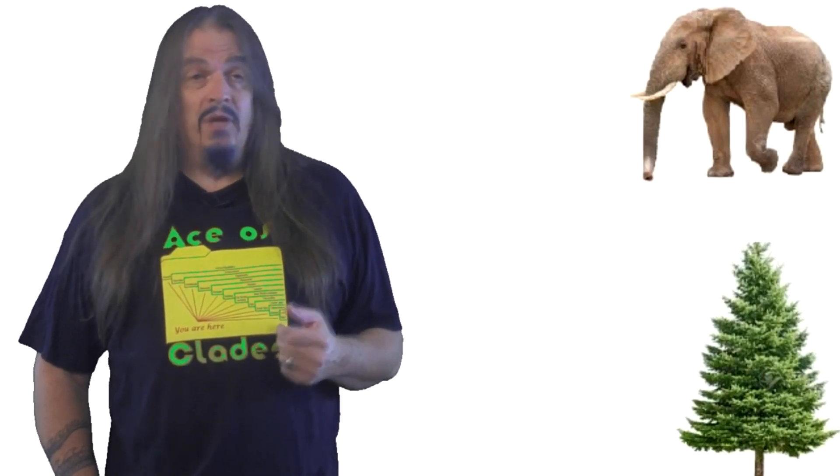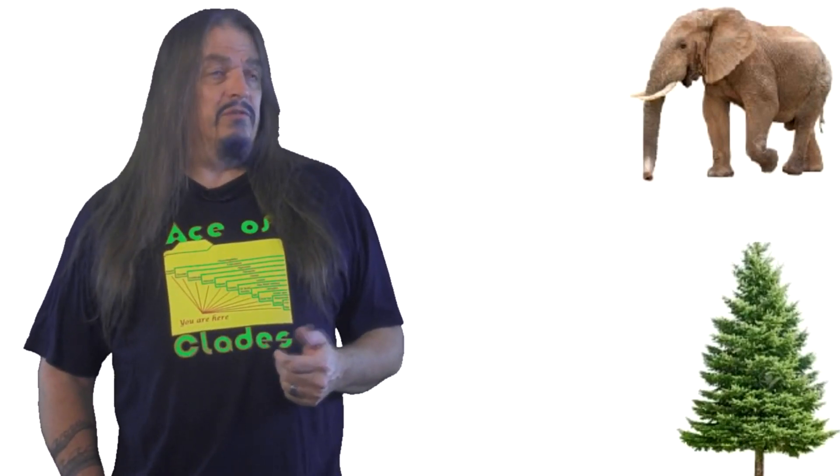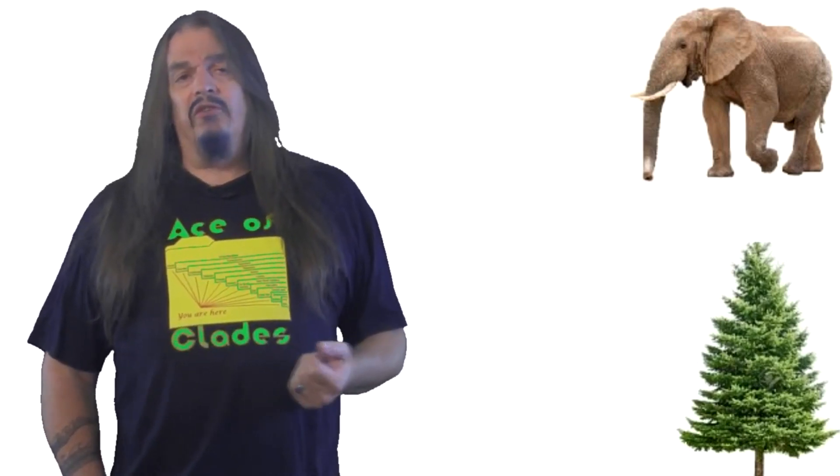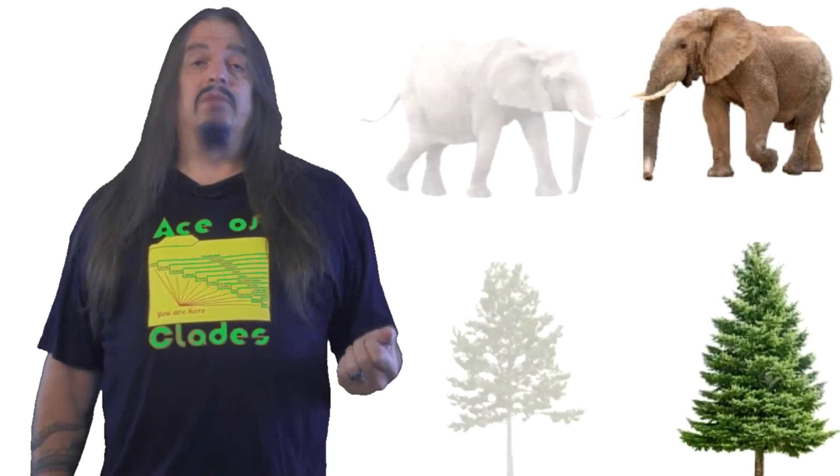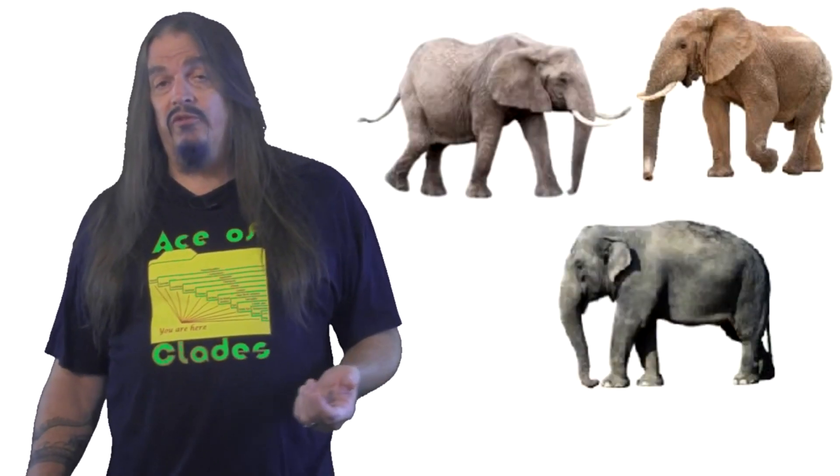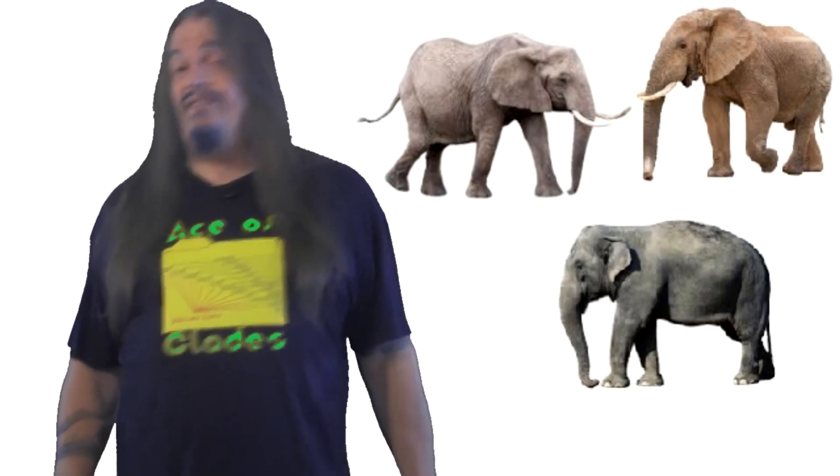If you compare any two organisms, it's easy to see the differences between them, especially if we pick the two most distinct things we can think of, like a pine tree and an elephant, for example. They're both part of the same domain, eukarya, but they're about as different from each other as any two eukaryotes can be. If you only look at two species at a time, you'll always be able to tell the difference between them, like even between two elephants and two pine trees. But if you compare three or more species at once, then you'll notice that one of these things is not like the others and two of these things are kind of the same.